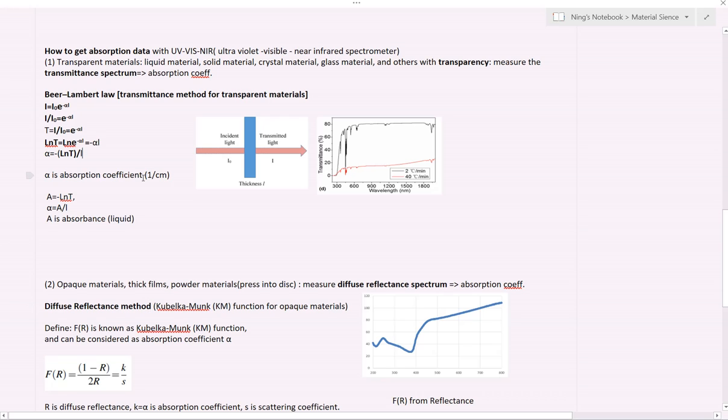It depends. If your sample is transparent, you'd better measure the transmittance spectrum. If your sample is not transparent, you can use the diffuse reflectance spectrum. And then we can calculate the optical absorption coefficient.